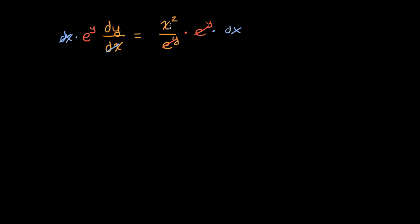And so all of this is now e to the y dy is equal to x squared dx. And just the fact that we were able to do this shows that it is separable.